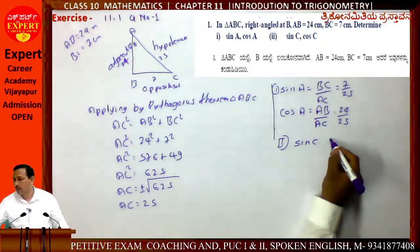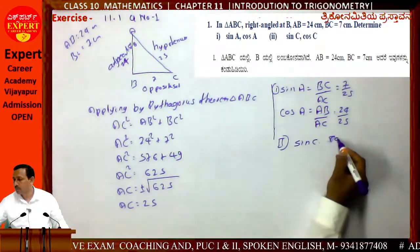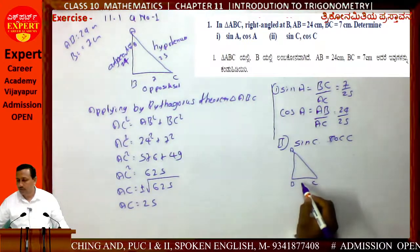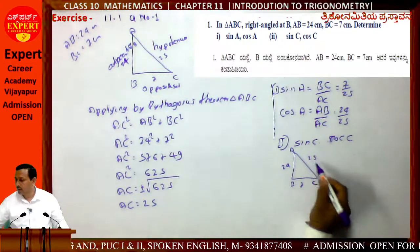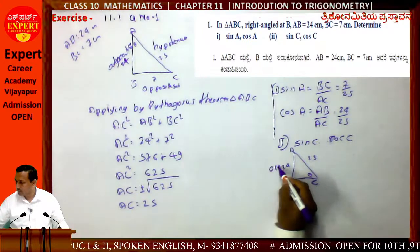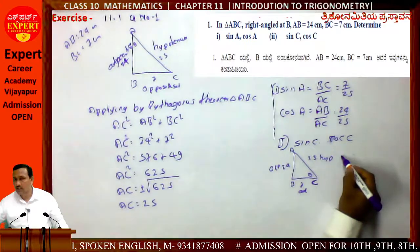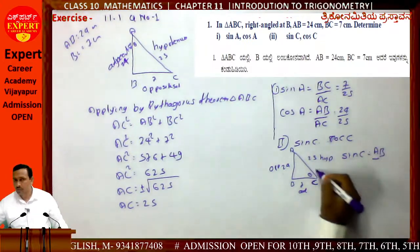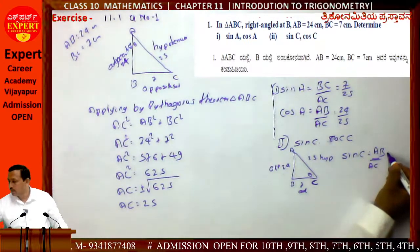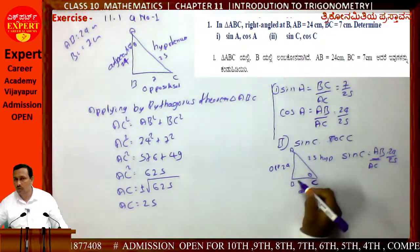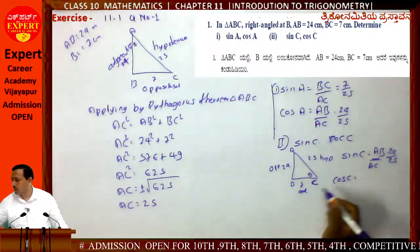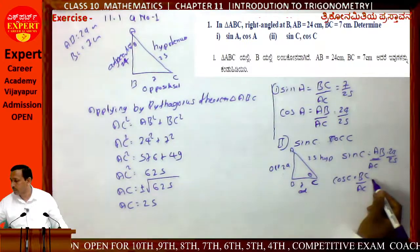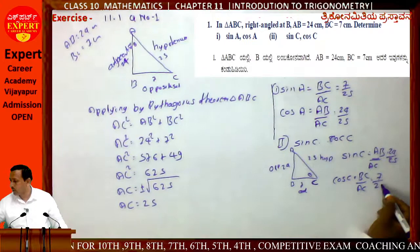For angle C: the triangle has sides 7, 24, 25. Sin C = opposite by hypotenuse = AB by AC = 24 by 25. Cos C = adjacent by hypotenuse = BC by AC = 7 by 25.